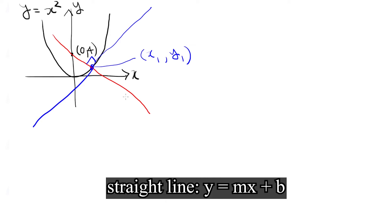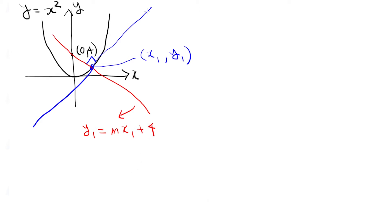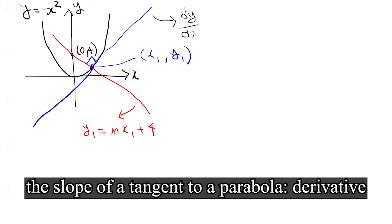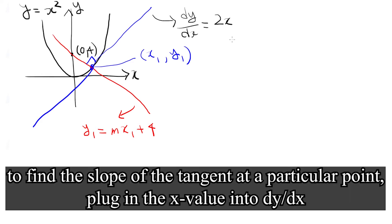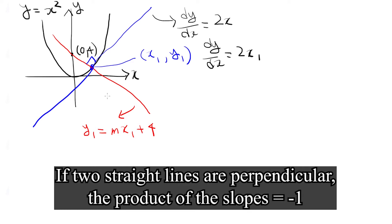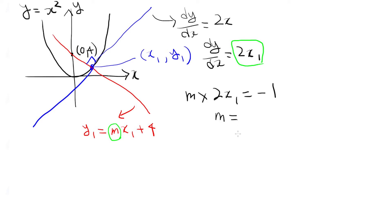The equation of this red straight line must be y sub 1 equals m times x sub 1 plus the y-intercept, 4. The slope of the blue tangent line is the derivative of the parabola, which is 2x, so the slope at this point is 2x sub 1. Because the red line and the blue line are perpendicular, m times 2x sub 1 must equal minus 1. Therefore, the slope of the red line is minus 1 over 2x sub 1.